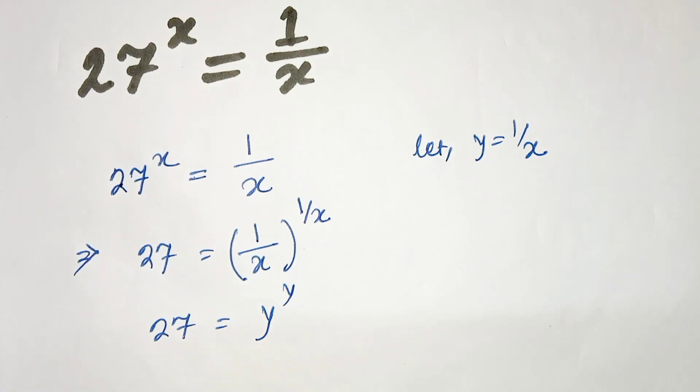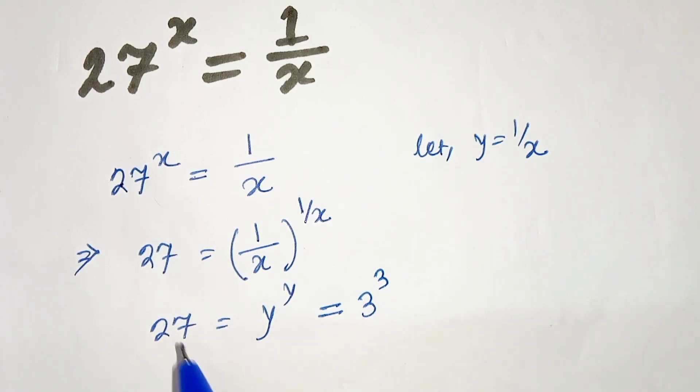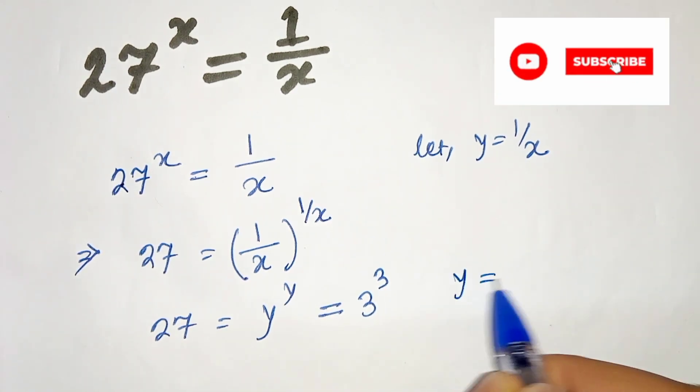We know that 3 raised to the power 3 equals 27. So 3 cube is 27. That means if we compare this, we get y = 3.